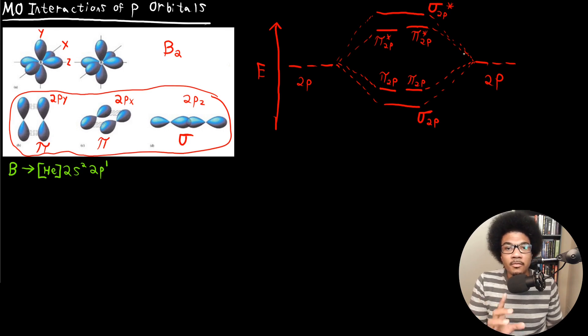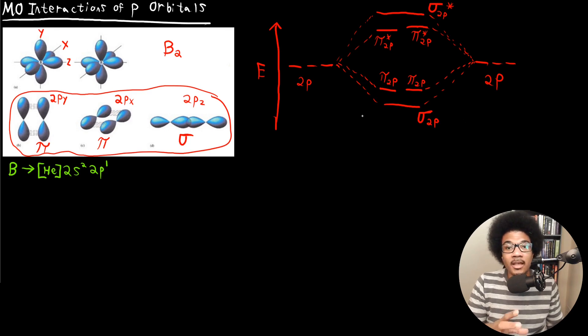In the next video, we'll look at how the ordering can change and examine full electron configurations that include this 2P splitting.